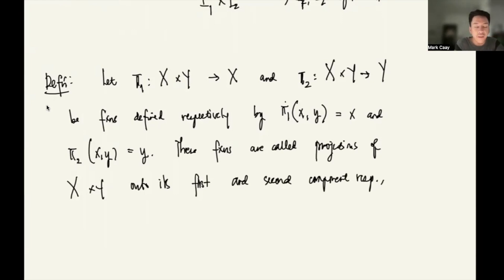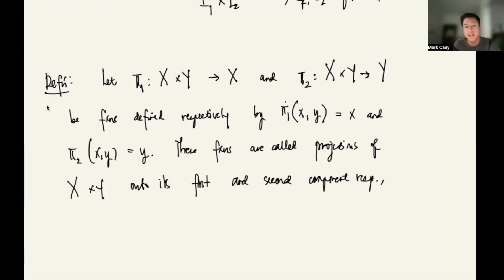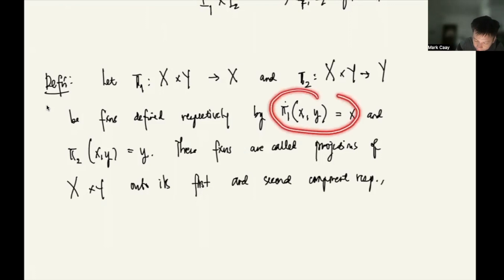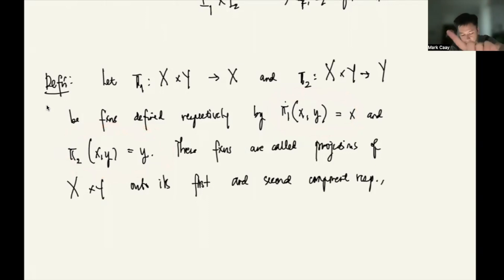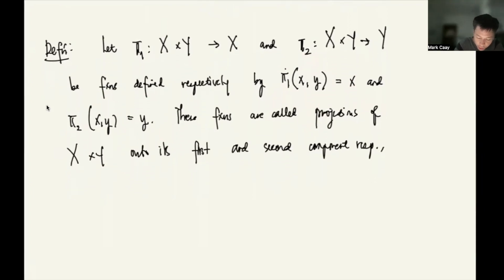We now have a definition. Let π₁: X×Y → X and π₂: X×Y → Y be functions. π₁ maps (x, y) to x, and π₂ maps (x, y) to y. These functions are called the projections of X×Y onto its first and second components respectively — and they are surjective (onto).